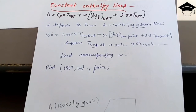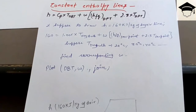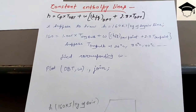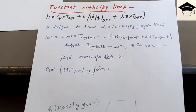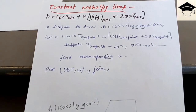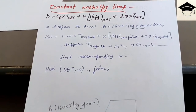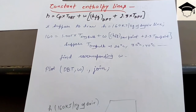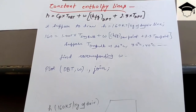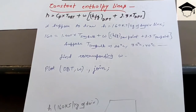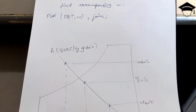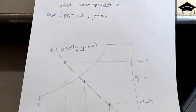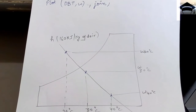This represents the enthalpy line H equals 160 kilojoules per kilogram of dry air. Similarly, if you need to find h at 200 kilojoules per kilogram, you use the same equation, take arbitrary dry bulb temperatures, find omega at each temperature, plot DBT comma omega, and join the points — this would represent that particular enthalpy line.